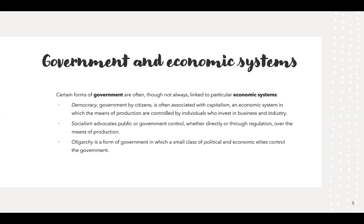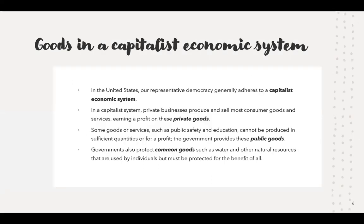Then there's the idea of an oligarchy — a form of government in which a small class of political and economic elites control the government. You'll see this in some parts of the Middle East and Asia. In the United States, we are a representative democracy, meaning we elect representatives who hypothetically carry out our wishes. I say hypothetically because it doesn't always work that way — ideally they represent us. That's how we do democracy in this country, at least at the federal level. In that system, we have the capitalist economic system, where private businesses produce and sell most consumer goods and services for a profit.